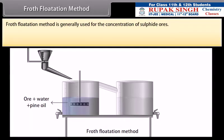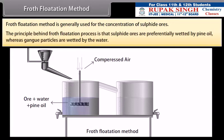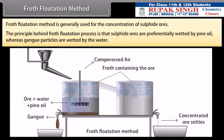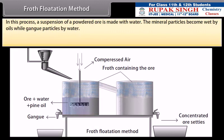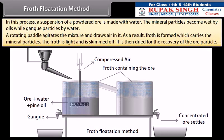Froth flotation method. This method is generally used for the concentration of sulphide ores. The principle behind froth flotation process is that sulphide ores are preferentially wetted by pine oil whereas gang particles are wetted by water. In this process, a suspension of a powdered ore is made with water. Collectors like pine oil, fatty acids and xanthates are added to it. Froth stabilizers like cressols and aniline stabilize the froth. The mineral particles become wet by oils while gang particles by water. A rotating paddle agitates the mixture and draws air in it. As a result, froth is formed which carries the mineral particles. The froth is light and is skimmed off. It is then dried for the recovery of the ore particles.